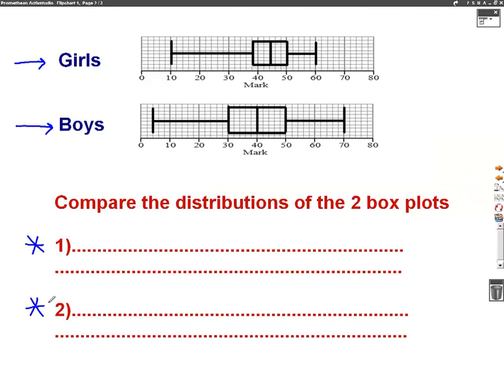The first thing we will comment on is the median. The median is the middle line. It is the middle number. The median for the girls, you can see, is 44. The median for the boys, the middle number, is 40.